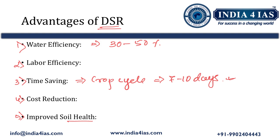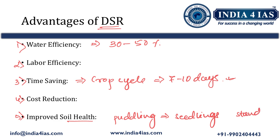In conventional paddy cultivation, puddling is done to transplant the rice seedlings. In DSR, this puddling method and continuous standing water are eliminated, which helps soil health and reduces methane emissions. In India, agriculture, especially paddy cultivation, is one of the major emitters of methane to the environment. Methane is a greenhouse gas that contributes to global warming and climate change.